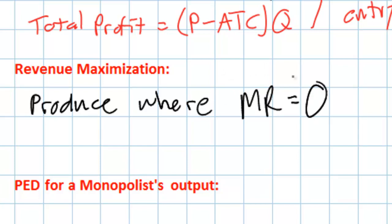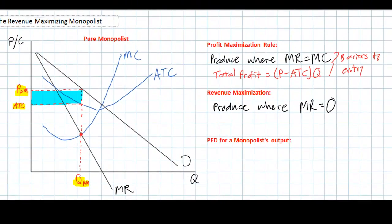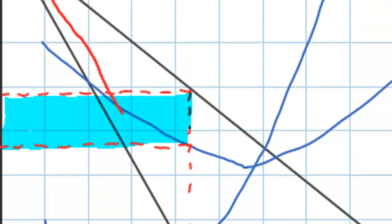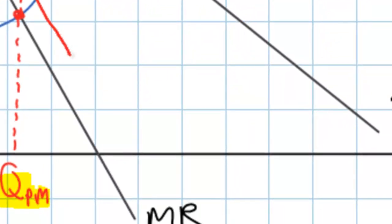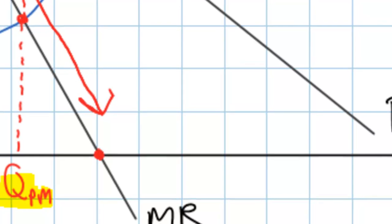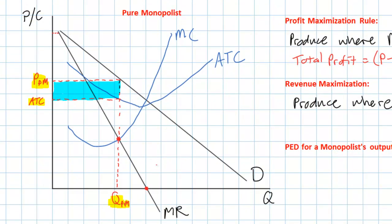Let's look at a graph and explain why this quantity is where total revenue is maximized. Looking at the marginal revenue curve, we can see that at low levels of output marginal revenue is relatively high. But as the firm increases its output, marginal revenue decreases because it must lower prices to sell additional units. Marginal revenue continues to decline until it equals zero — right here on the graph. When the firm's marginal revenue equals zero, its total revenue is maximized. We'll call this quantity QRM, for revenue maximization.